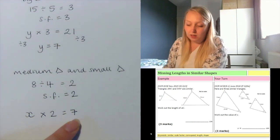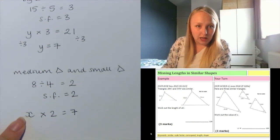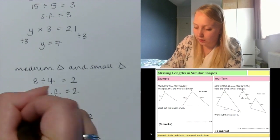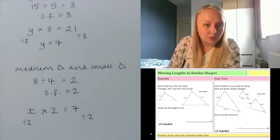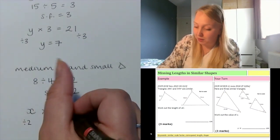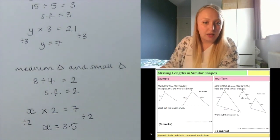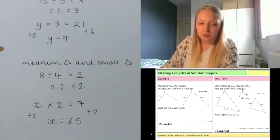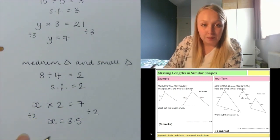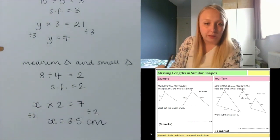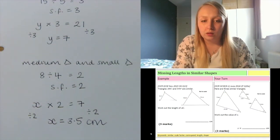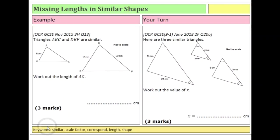To work out X, I do the opposite of times by 2, which is divide by 2. So X equals 7 divided by 2, which gives 3.5. That's a length: X equals 3.5 centimetres. That one is trickier because there are two steps — finding the base of the medium triangle first, then using that to find X in the small triangle.